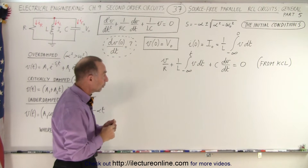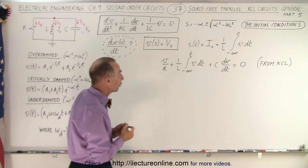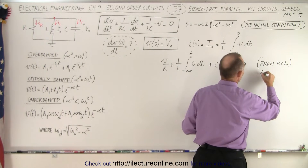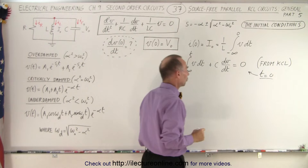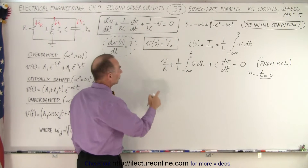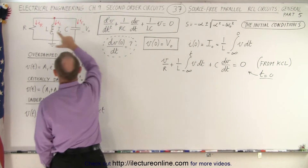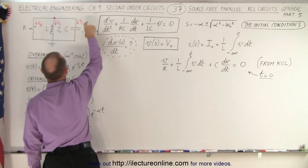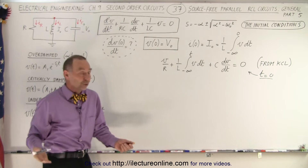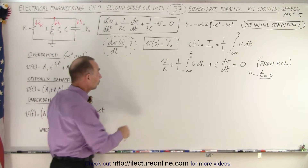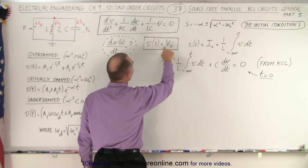Now what we're going to do is we're going to apply the initial conditions. We're going to set time equal to zero and apply that back to this equation right here. When time is equal to zero, notice that the voltage across the resistor will be equal to the voltage across the capacitor, which is of course equal to the voltage across the inductor — after all, it's a parallel circuit. So this V, when time goes to zero, becomes V sub-naught.